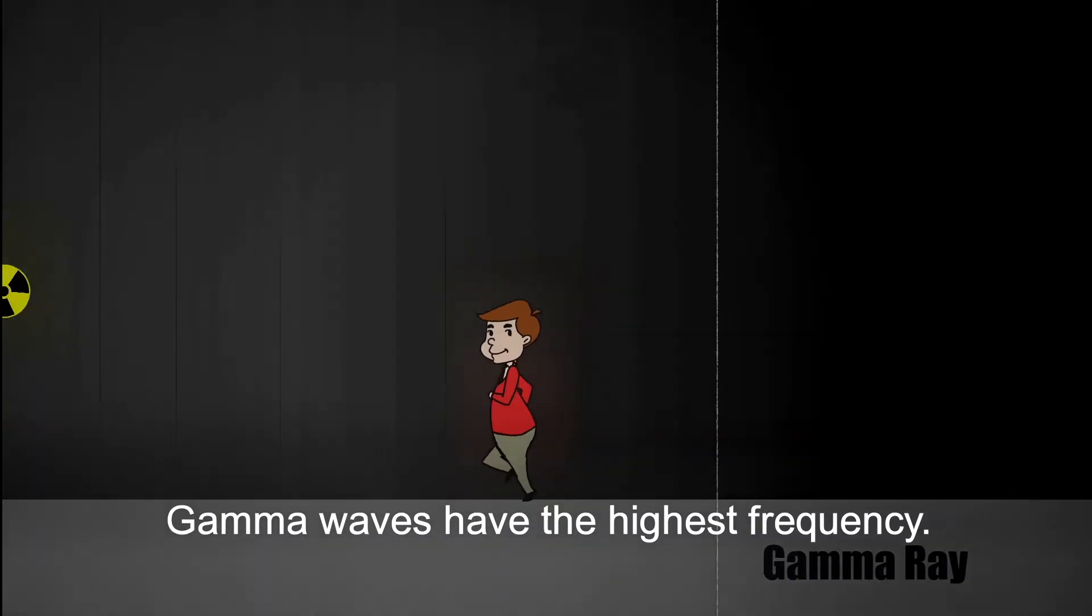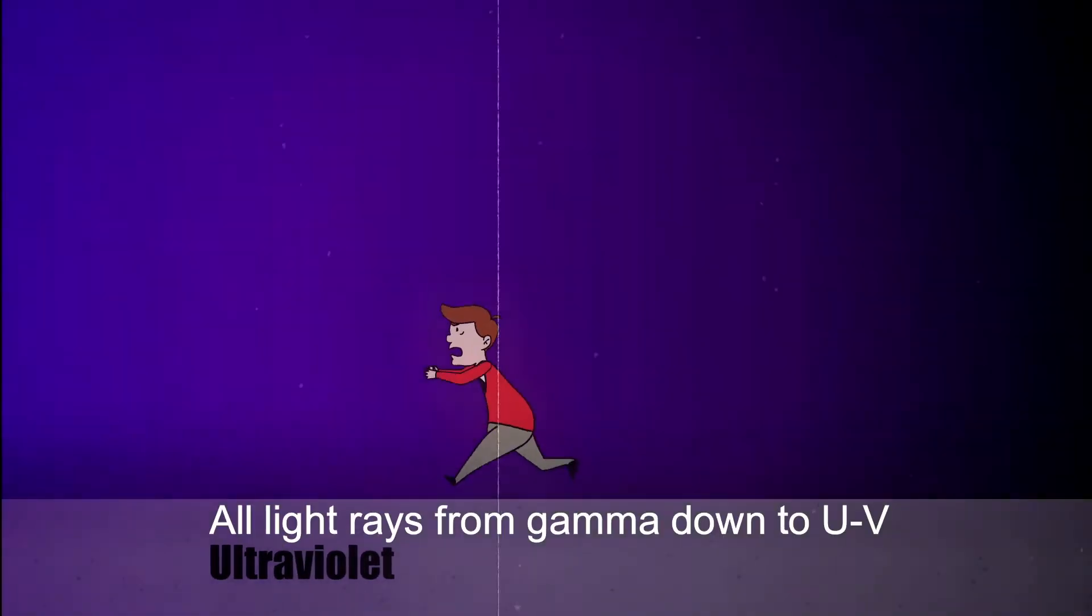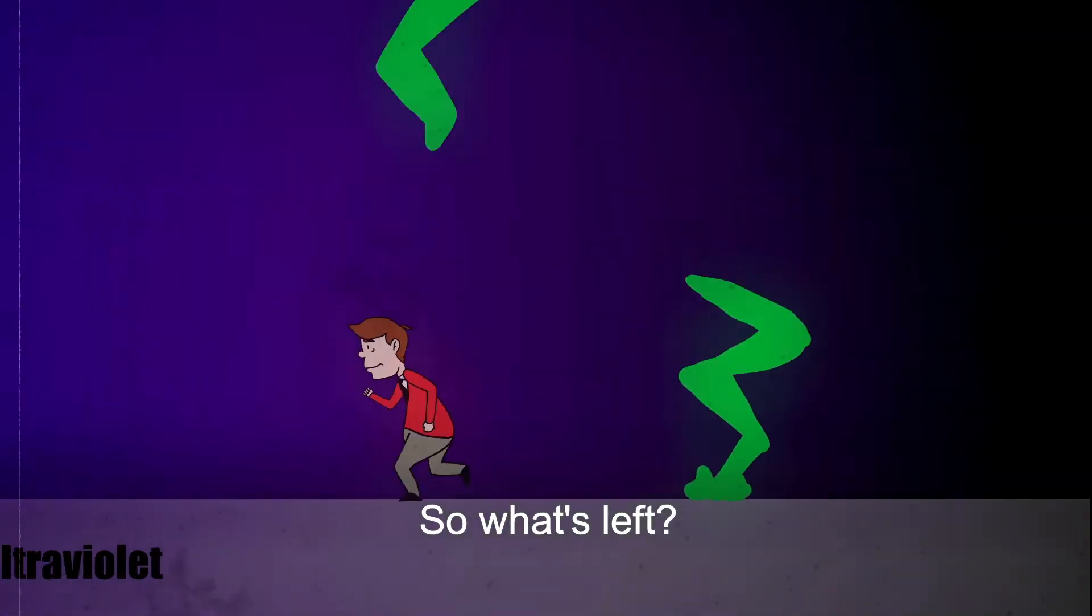Gamma waves have the highest frequency. They could allow downloading of thousands of full-length movies a second. But all light rays from gamma down to UV damage our bodies and don't travel well in the atmosphere.